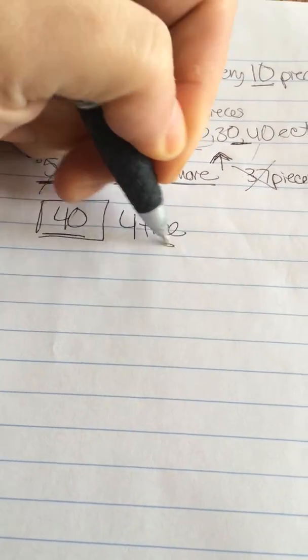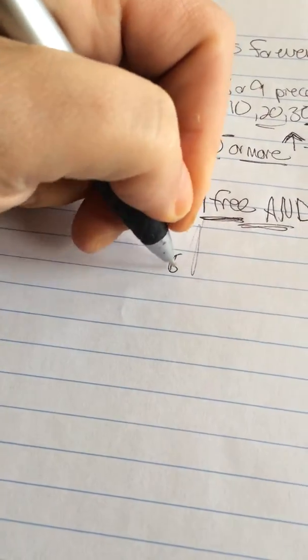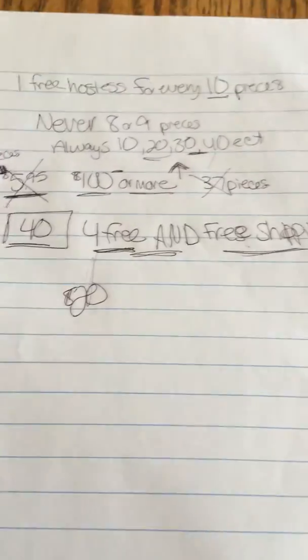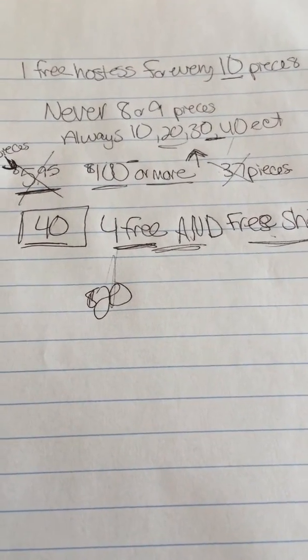So your minimum order, if at all possible, should always be at least 40 pieces. That way you're getting four hostess rewards, so four freebies, and you're also getting free shipping. So that's huge. Four freebies which you could sell, that's $20 in profit, and you also have no shipping cost.